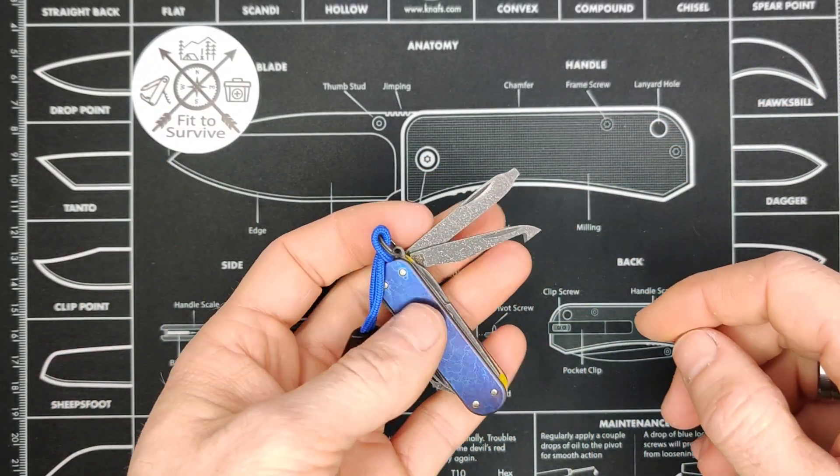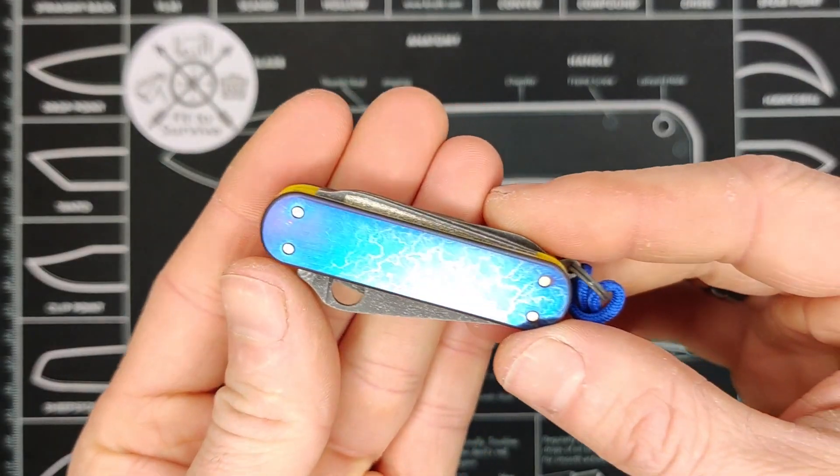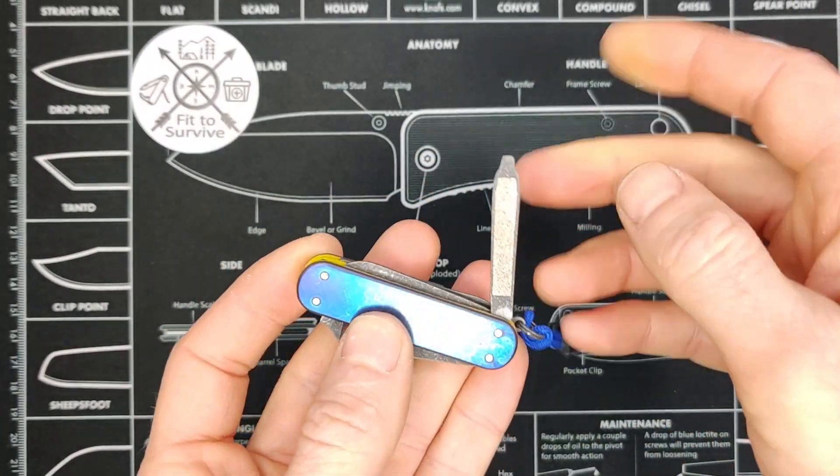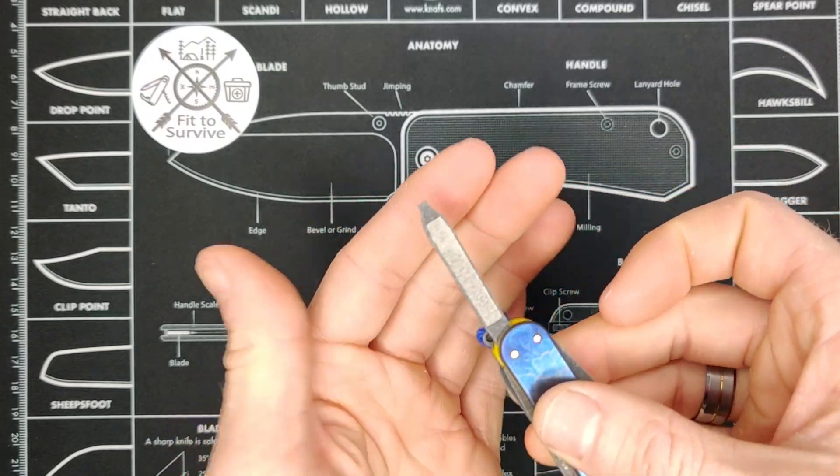So I set it up to where the file section is easily accessed with your thumbnail, and so it's openable without actually using the nail knick on the back.